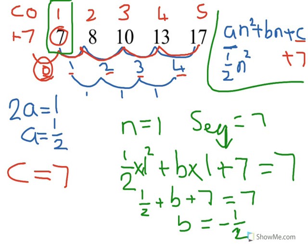We need to make sure we write this somewhere on the page. We now know B is minus one half, so I need to put minus one half N. So our answer is one half N squared minus one half N plus 7.